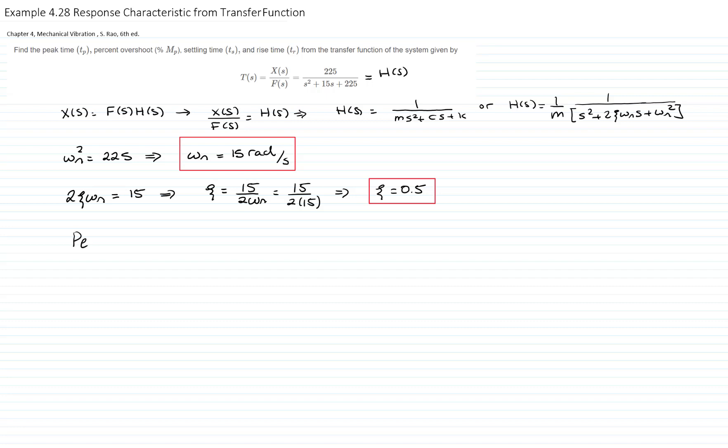The peak time, which is the time that is required for the response to attain the first peak of the overshoot, can be calculated as pi over omega d. And remember that omega d is omega n times square root of 1 minus zeta squared. We input the values.